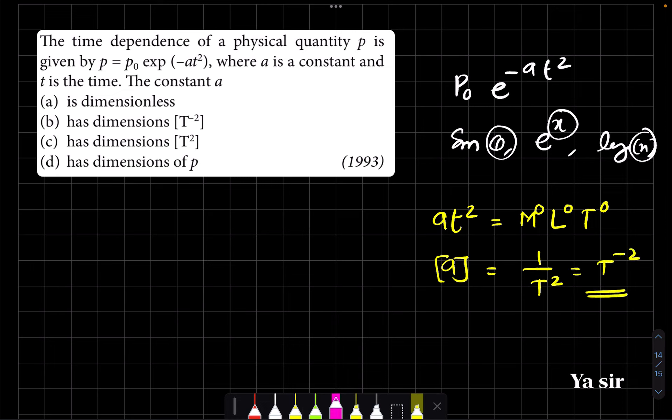What is the correct option? T to the power minus 2, option b. All right, thank you.